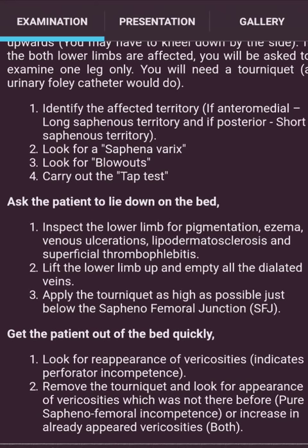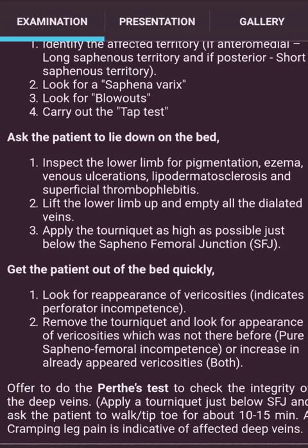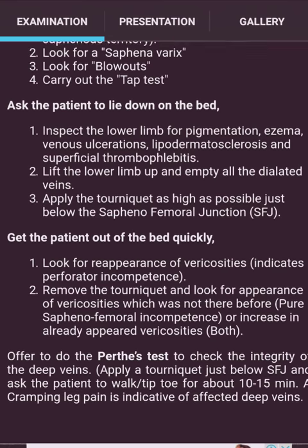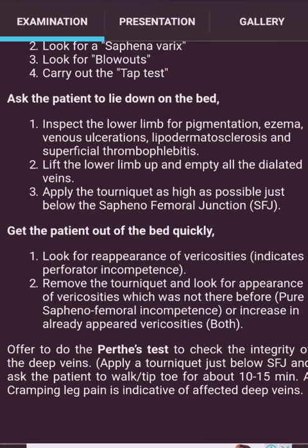Look for a sapheno-varix, look for blowouts, and carry out the tap test. Ask the patient to lie down. Inspect the lower limb for pigmentation, eczema, venous ulceration, lipodermatosclerosis, and superficial thrombophlebitis. Then lift the lower limb up to empty all dilated veins, apply a tourniquet as high as possible just below the saphenofemoral junction, and get the patient to stand.